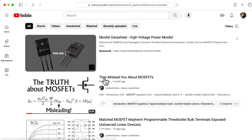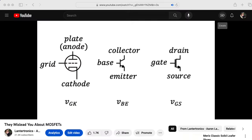I made a video called They Misled You About MOSFETs. And in that video, I said that tubes are controlled by the grid-to-cathode voltage and that assuming you can hook the bulk to the source, MOSFETs are controlled by the gate source voltage and BJTs are controlled by the base emitter voltage.